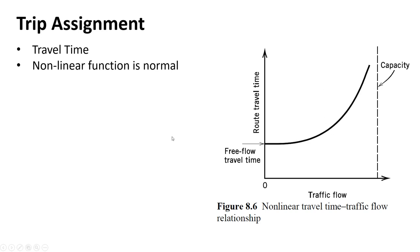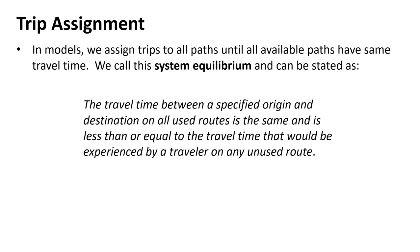The computer model assigns cars to each route and iterates: it assigns some, sees a route slowing, assigns more to another route, that one slows, then to the third, and keeps iterating until equilibrium. The equilibrium condition: travel time between a specified origin and destination on all used routes is equal, and no unused route is faster. We assign trips until all routes have equal travel time.